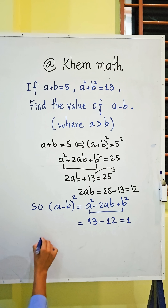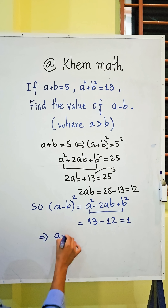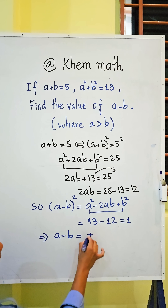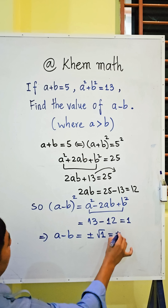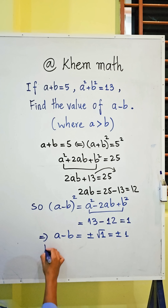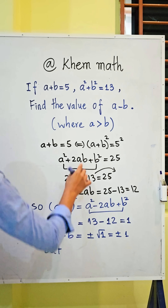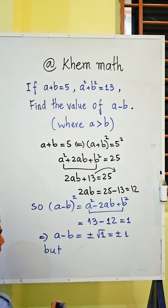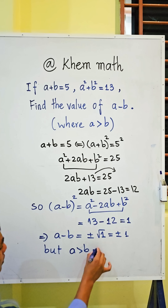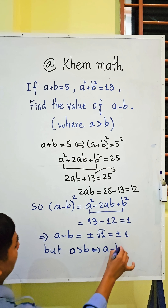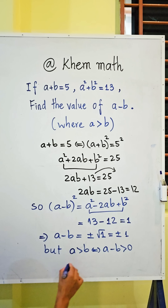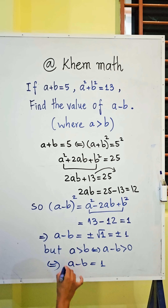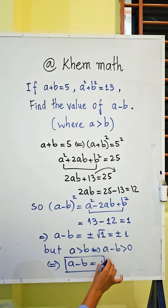Then we get the values of a minus b equal plus and minus square root of 1, which equals plus and minus 1. But since a is bigger than b, a minus b must be positive. So the answer is a minus b equals 1.